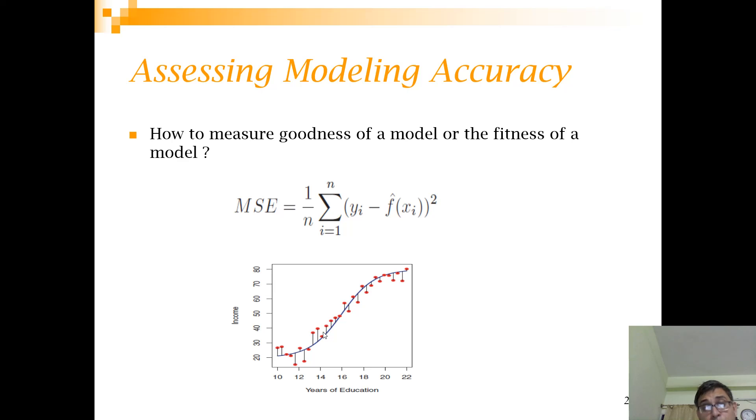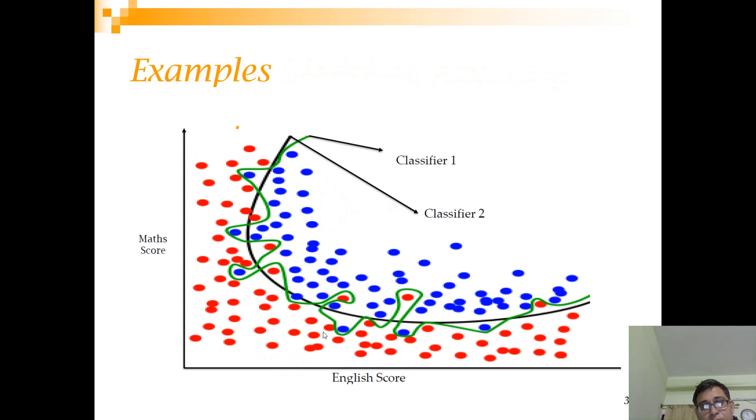So now I bring you to the second topic which is overfitting. Alright so let us look at this example. First let me set the context. This is data where you have two independent variables. Each row actually represents a student. You have their scores in maths and english and basically they are either being successful in placement interviews or not. The ones marked in blue are the ones who are getting successful and the ones who are not getting successful are marked in red.